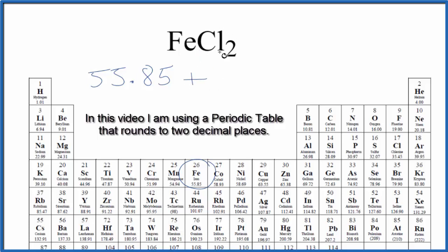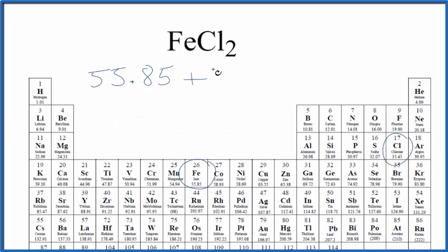We add to that the chlorine. Chlorine is 35.45 grams per mole. We have two chlorine atoms. We're going to multiply that by two.